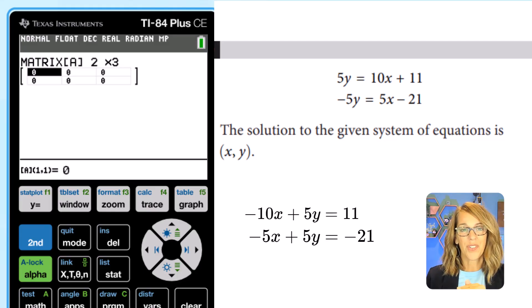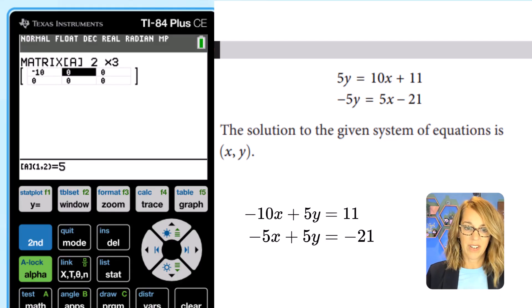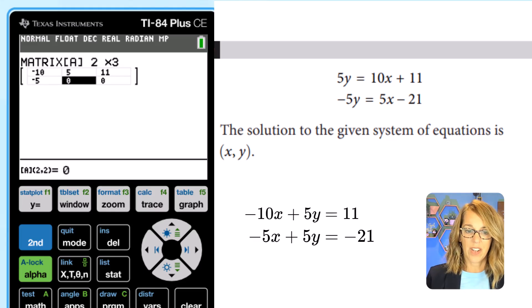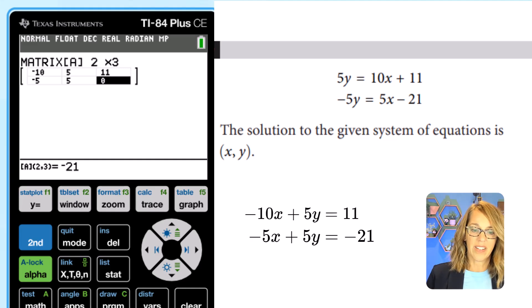Now across this first row, I'm going to type in just those coefficients, just my numbers. So I'm going to do a negative 10 using the negative at the bottom. So negative 10, enter, and then I've got five, enter, and then 11, enter. And then for that bottom row, that second equation, the first coefficient is negative five, enter, five, enter, negative 21, enter.